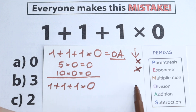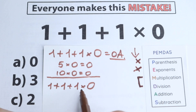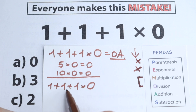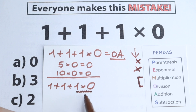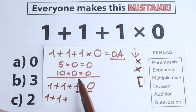We skip the exponents, then we move to Multiplication and Division — and here's the main trick. A lot of students forget to include Division in this group. In our case we don't have division, only multiplication. The key point is that this multiplication applies only to the two numbers directly involved, not to the whole expression. So we have 1 plus 1 plus (1 times 0). Since 1 times 0 equals 0, we replace that part with 0.